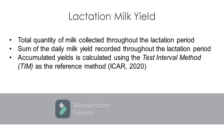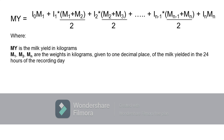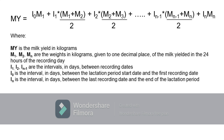Milk yield is calculated through the test interval method using this formula. Where MY is the milk yield in kilograms; M1, M2, Mn are the weights in kilograms given to one decimal place of the milk yielded in the 24 hours of the recording day; I1, I2, In-1 are the intervals in days between recording dates; I0 is the interval in days between the lactation period start date and the first recording date; and In is the interval in days between the last recording date and the end of the lactation period.